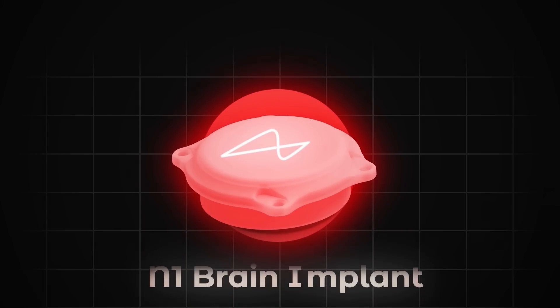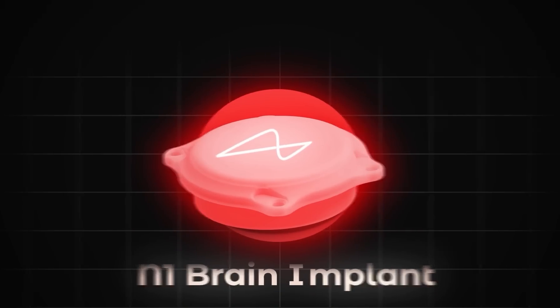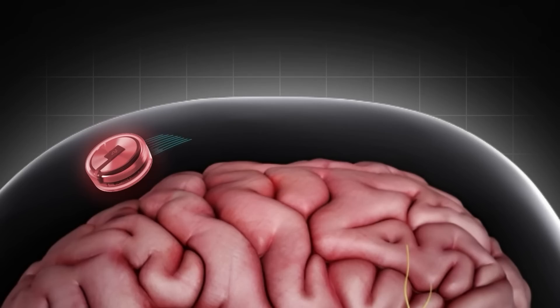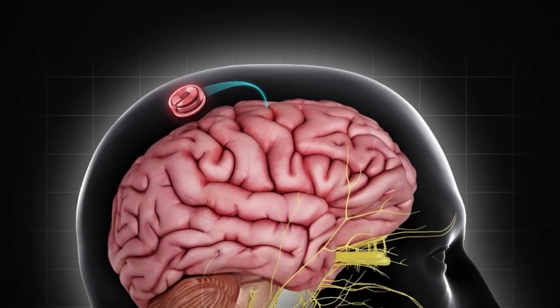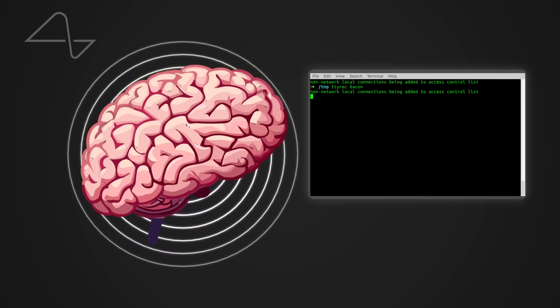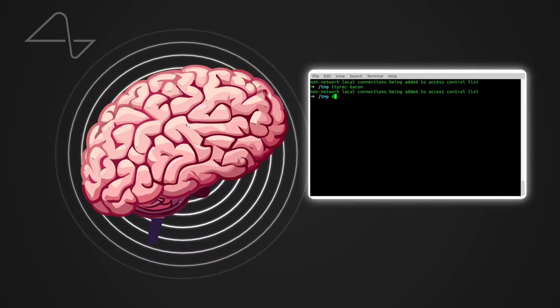Nolan currently has Neuralink's N1 Brain Computer Interface chip implanted underneath his scalp and sitting flush with the bone of his skull. Underneath that chip are 64 tiny wires that have been placed into the surface of his brain about 2mm in depth and specifically targeting the motor cortex region. This device allows Nolan's brainwaves to be translated into digital command prompts.